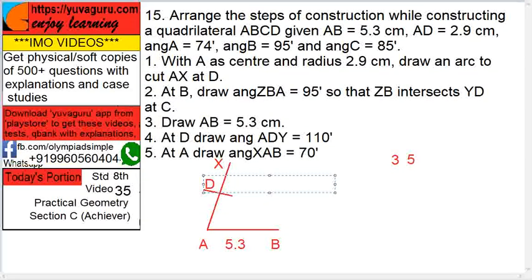That gives me point D, so step 1 is next. Now only steps 2 and 4 remain. So what should we do now? If we start with step 2, at B draw angle ZBA at 95 degrees so that ZB intersects YD. But do you have YD here? You don't have YD at all, so that's why 2 can't be done.